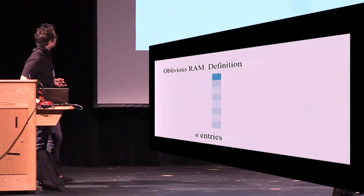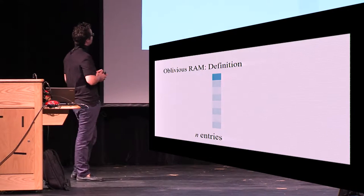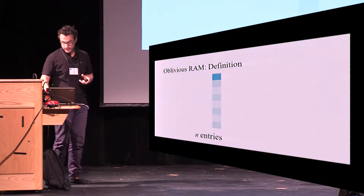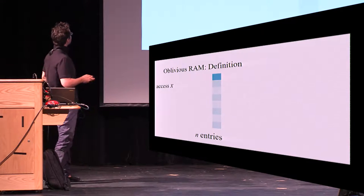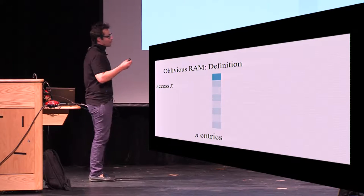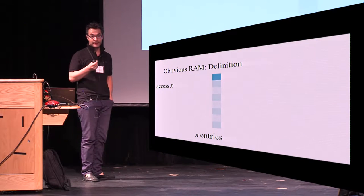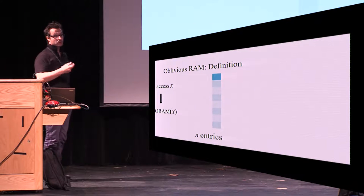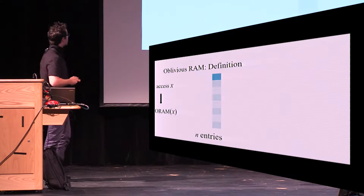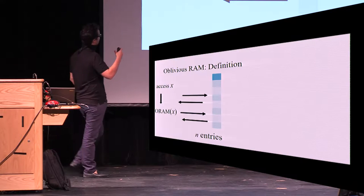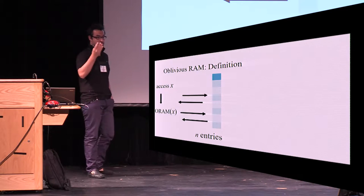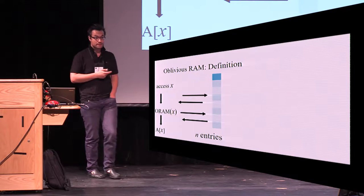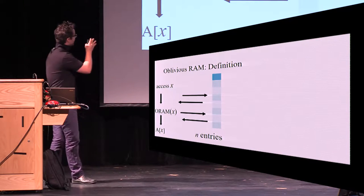Let me give an informal definition of oblivious RAM. We have an array of n entries, and we want to access one entry out of this array — access x. We use an ORAM protocol to access entry x. This ORAM protocol will start accessing some number of entries and then output a[x]. This is the real world.